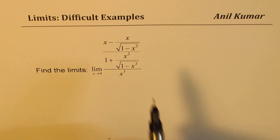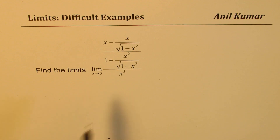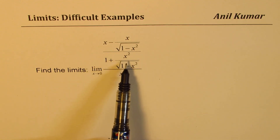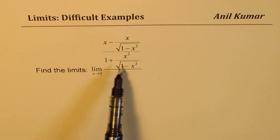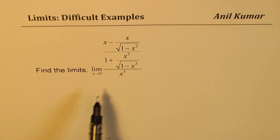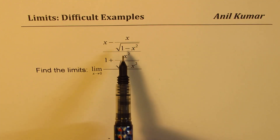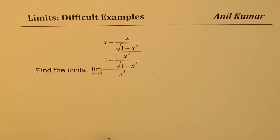We need to find the limit of this complicated function, which is x minus x over square root of 1 minus x squared, divided by 1 plus x squared over square root of 1 minus x squared, all divided by x cubed. To solve such questions, we may have to do rationalization, but before that we need to simplify these three layers of fractions — that is a very critical step.